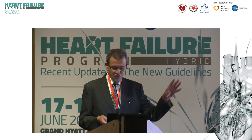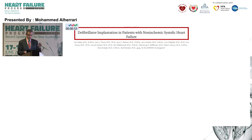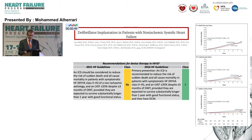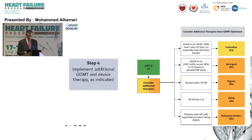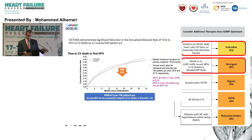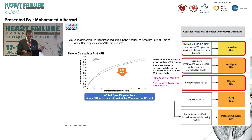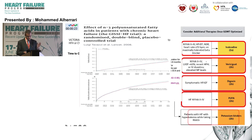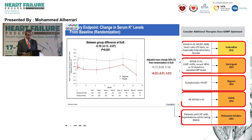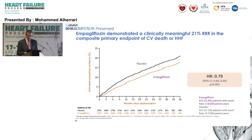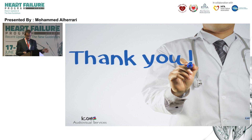For the ICD, the American guidelines maintain Class 1A recommendation for both ischemic and non-ischemic cardiomyopathy, whereas the European guidelines downgraded ICD for non-ischemic to Class 2A based on the DANISH trial, which showed no mortality benefit. Other treatments include ivabradine for heart rate above 70, based on the SHIFT trial. For worsening heart failure, treatment must be escalated or the patient readmitted. Digoxin remains useful for symptomatic patients. Omega-3 polyunsaturated fatty acids based on the GISSI trial, and potassium binders — now Class 2B recommendation — help keep patients on RAS inhibitors when hyperkalemia is present, as shown by the DIAMOND trial.